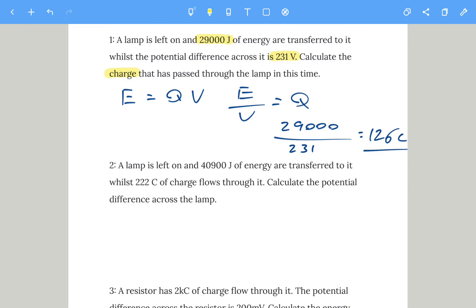Number two: a lamp is left on and 40,900 joules of energy are transferred to it whilst 222 coulombs of charge flow through it. Calculate the potential difference. E equals Q times V, so voltage will be energy divided by charge. That's 40,900 divided by 222 coulombs, which gives us 184 volts.